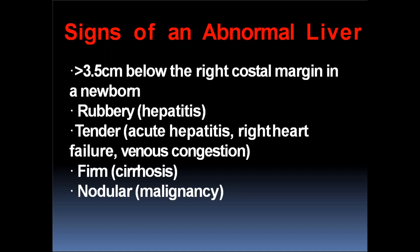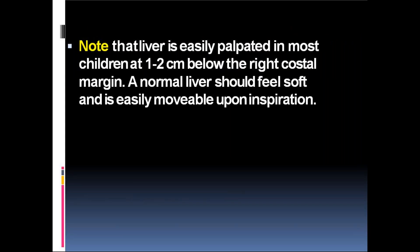What are the signs of abnormal liver? More than 3.5 centimetres below the right costal margin in a newborn is abnormal. A rubbery feel of liver is due to hepatitis. Tender in case of acute hepatitis and right heart failure. Firm in case of cirrhosis and nodular in case of malignancy. Note that liver is easily palpated in most children at 1 to 2 centimetres below the right costal margin. Normal liver should feel soft and is easily movable upon inspiration. It should not be firm or hard, and should be palpable 1 to 2 centimetres below the right costal margin; beyond that, it should not be palpable.